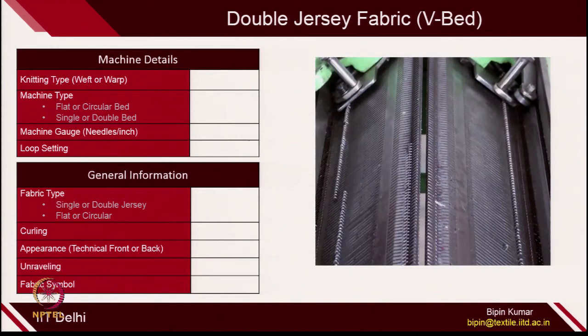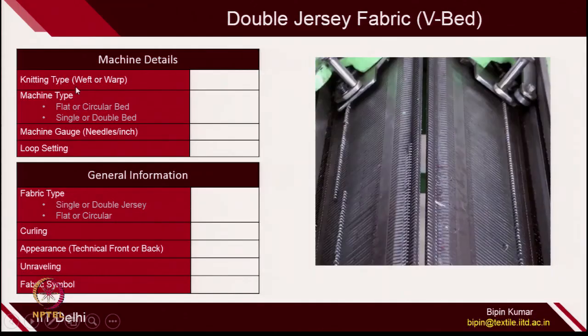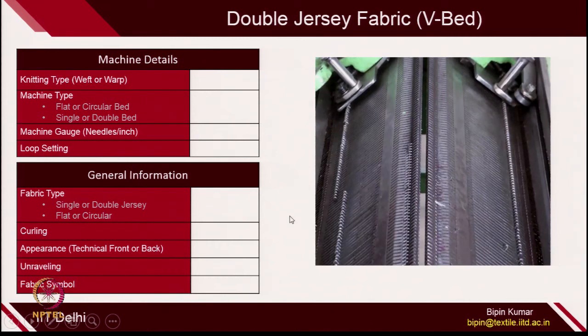If you analyze any fabric, before you start, you must know the machine details on which this particular fabric is created. Especially what type of machine they are using, what type of knitting they are using, what is the nature of machine whether it is flat, circular, single bed, double bed, what is the gauge of the machine, what is the setting of the machine, loop setting — all of these things you must know. Apart from that, the general behavior of the fabric, whether you call this fabric as single jersey, double jersey, curling, appearance, unraveling, fabric symbol — all of these things you should be doing in case of fabric analysis.